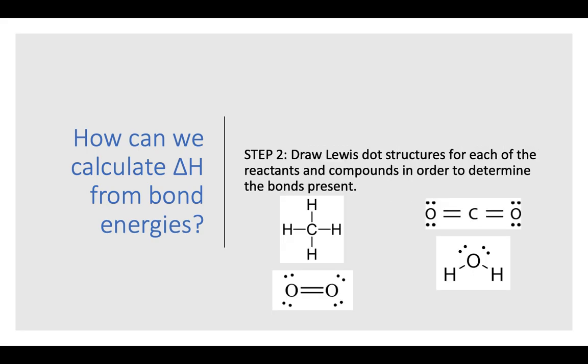So the next step is we actually have to go back and draw those Lewis dot structures for each of our reactants and products. That's why we did this whenever we studied chemical bonds. So I actually have pictures of each of the Lewis dot structures. We have methane here. We have oxygen here. It's a double bond. We have double bonds of oxygen to carbon for carbon dioxide. And then we have water right here. It's really important to draw those Lewis dot structures so we know what bonds are present.